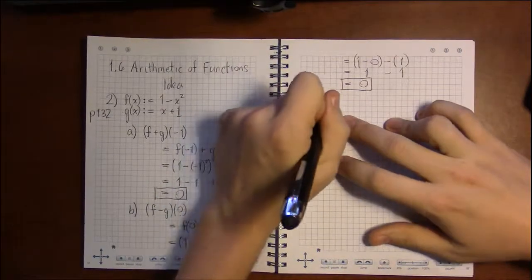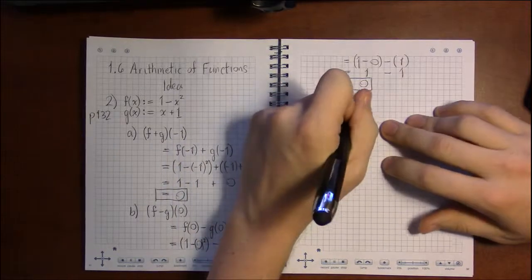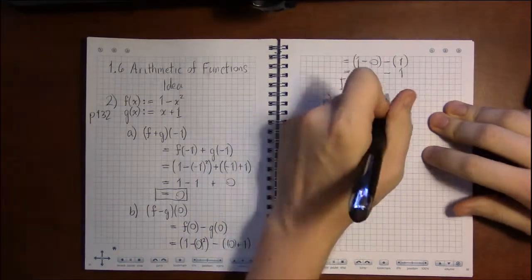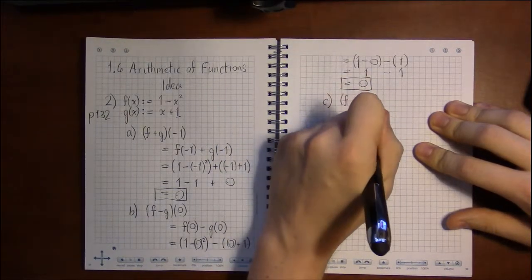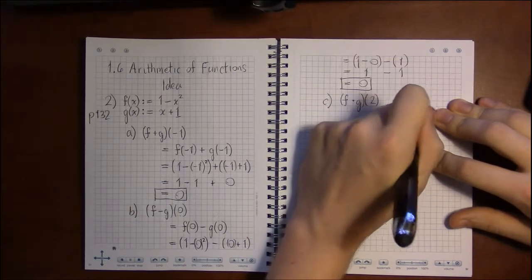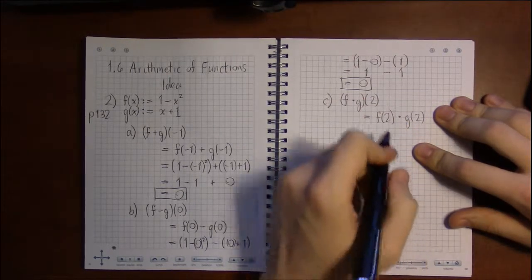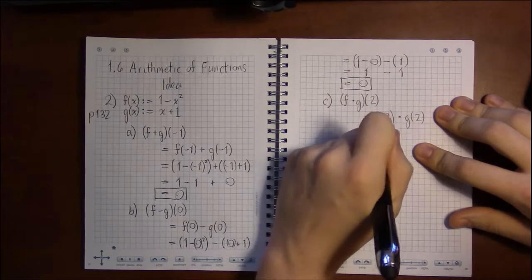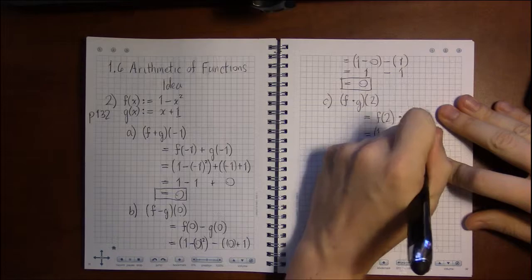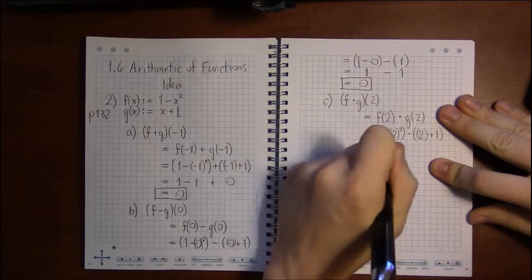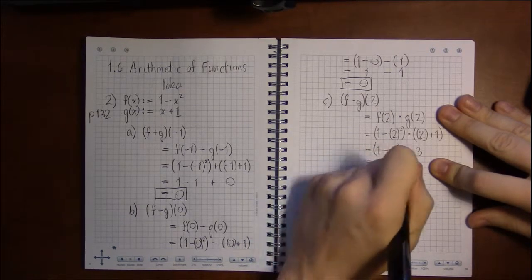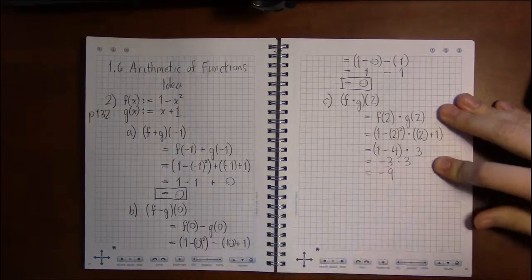For part c, f times g at 2. As you might guess, to evaluate multiplication of functions you just do f of 2 and g of 2 and multiply the results together. f of 2 gives us 1 minus 2 squared, and g of 2 gives us 2 plus 1. That's 1 minus 4 times 3, so minus 3 times 3, which is minus 9.